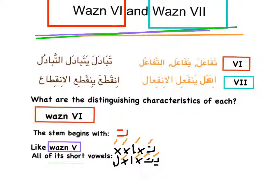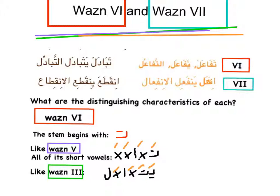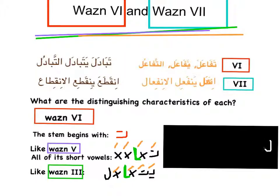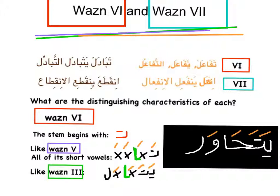An example: we have تحاور (taHawara). So if you replace the root letters with H-W-R, you have taHawara — to converse. And just like wazn 3, it has an alif in the second position. The example we gave is taHawara — to converse — and the alif appears in the pattern, as you can see.